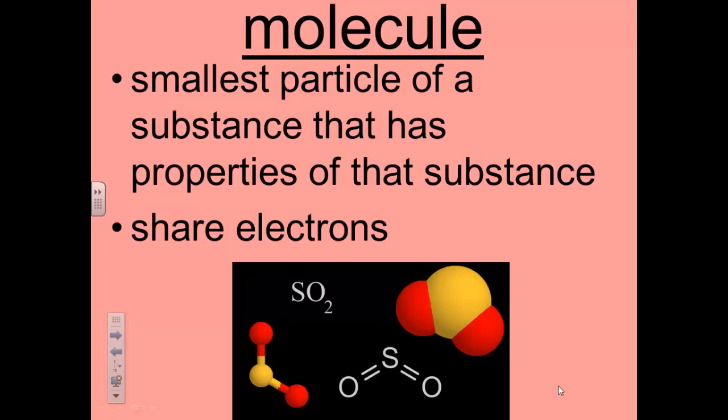Atoms may combine with other atoms to form molecules. A molecule is the smallest particle of a substance made of combined atoms that has the properties of that substance. In some molecules, atoms share electrons. Some electrons no longer go around just one atom. They go around two or more atoms. These atoms are then bonded together in the molecule.